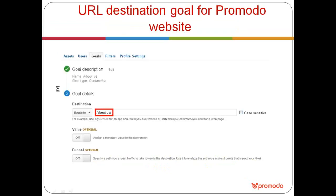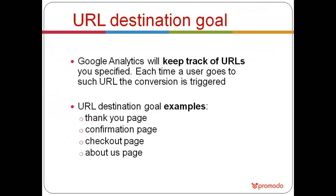More examples of URL destination goals: you can set any URL that indicates process completion. For example, it could be a confirmation page when the user has signed up for your email newsletter, or a checkout page indicating that the user has made a purchase, and so on.